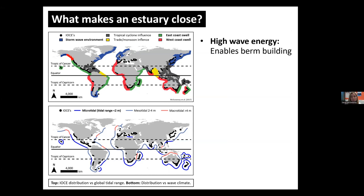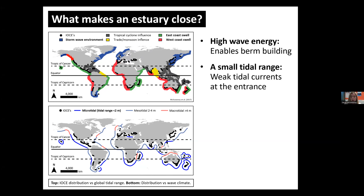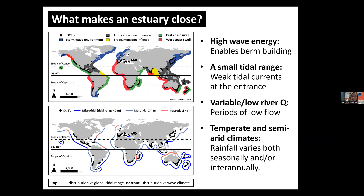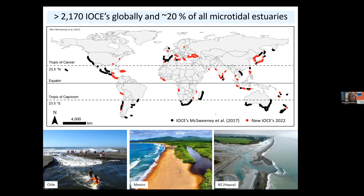There are a lot of these estuaries around the world that intermittently close, and some of the work I did in my PhD was looking at the boundary conditions for their formation. To get an estuary to close, we need a few things. First, we need consistent high wave energy — we tend to see them in wave-dominated settings around the world because they need enough wave energy to build the berm across the entrance. We also see them in areas with small tidal ranges. We need areas with variable or lower river discharge, which allows sediment brought onshore by waves to stabilize across the entrance. Because of that, it's reflected in climate — we tend to see these estuaries most common in temperate and semi-arid climates where we get variability in rainfall and river flow.